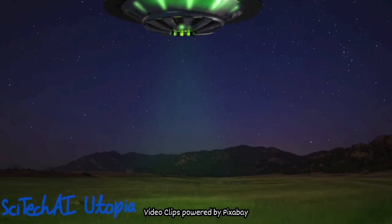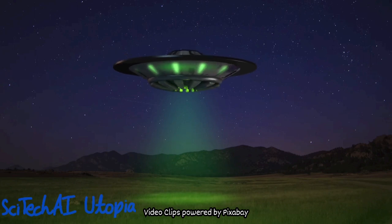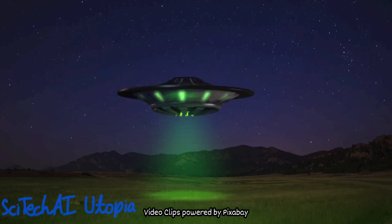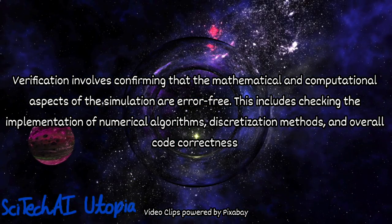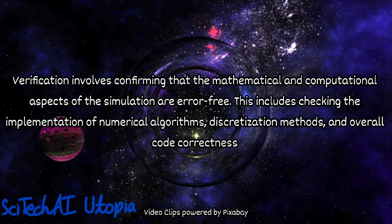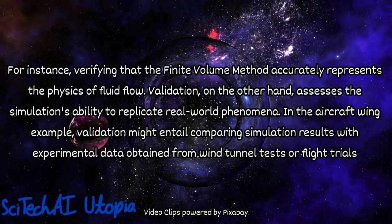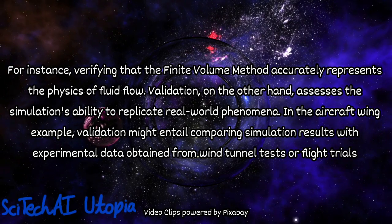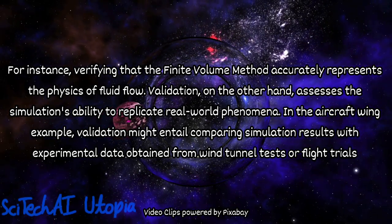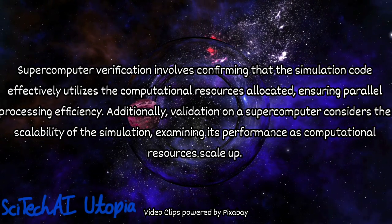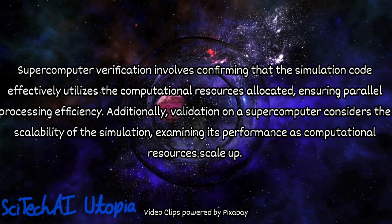These steps ensure that the simulation is not only accurately initiated and executed, but also that results are comprehensively collected and analyzed for scientific insights. Next is supercomputer verification and validation. Validation is the process of comparing simulation results with experimental data or other reliable sources to ensure the model accurately represents the physical system. For our aircraft wing simulation, this involves comparing the simulated airflow patterns, pressure distribution, and other relevant parameters with wind tunnel experiments or real flight data. Verification assesses the correctness of the numerical methods and implementation. This can be done by comparing simulation results against analytical solutions for simplified cases or by conducting benchmark simulations with known outcomes.